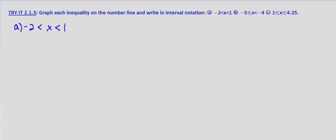And our first problem, we're told to graph each inequality on the number line and then write in interval notation. Our first problem A is negative 2 is less than x, which is less than 1. Both of them are non-inclusive, both less than.